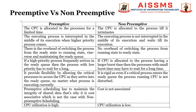Primitive CPU scheduling provides flexibility by allowing critical processes to access the CPU as they arrive in the ready queue, no matter what process is currently executing. In non-primitive CPU scheduling, it is rigid — even if a critical process enters the ready queue, the process running on the CPU is not disturbed. Primitive scheduling has to maintain the integrity of shared data, making it cost associative, which is not the case with non-primitive scheduling, where cost is not associated at all.